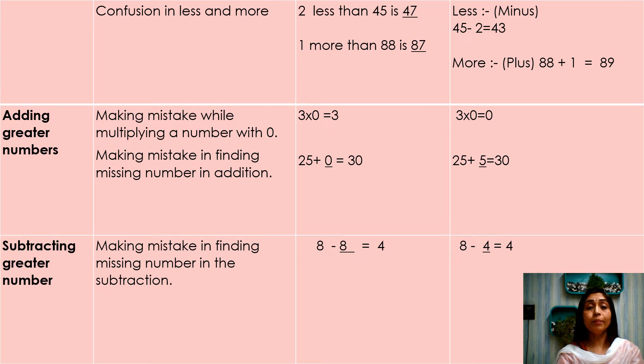Adding greater numbers. Making mistake while multiplying a number with 0. 3 multiply 0 is equal to 3, but the answer should be 0. Making mistake in finding missing number in addition.